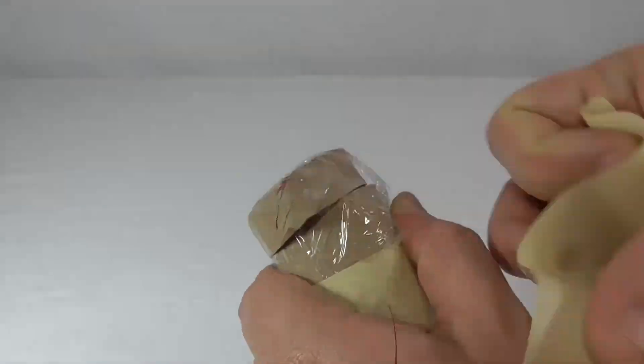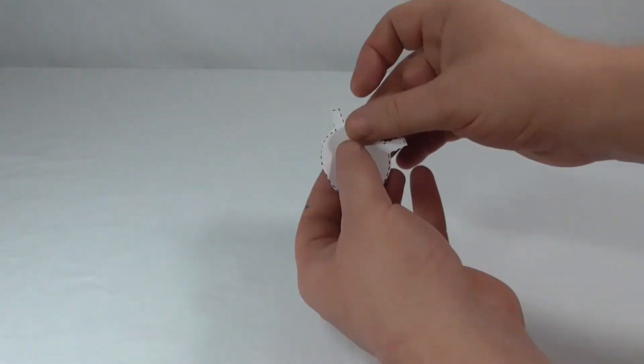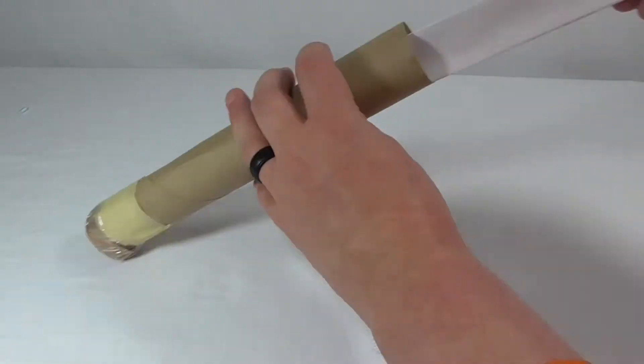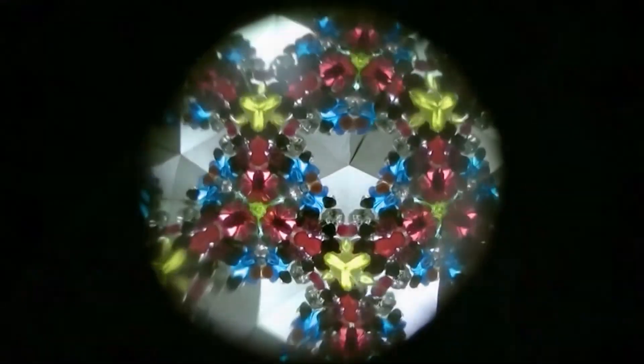Cover this end of the kaleidoscope with saran wrap and a piece of white paper to diffuse the light. Stick the reflector down the middle of the tube and look through it as you hold the kaleidoscope up to a light source and spin it.